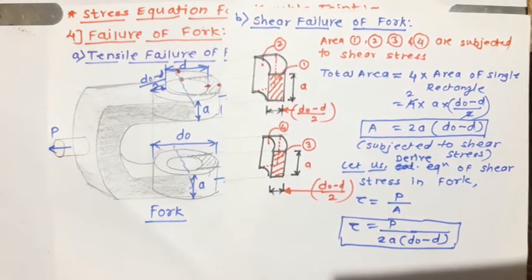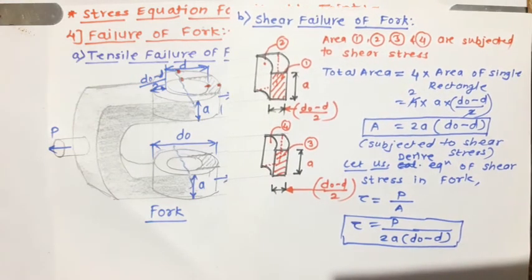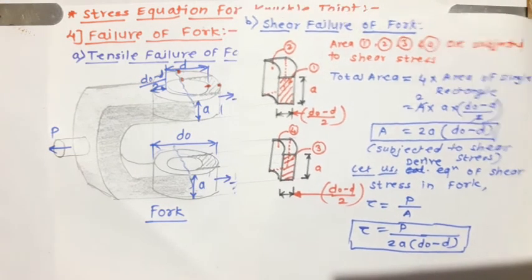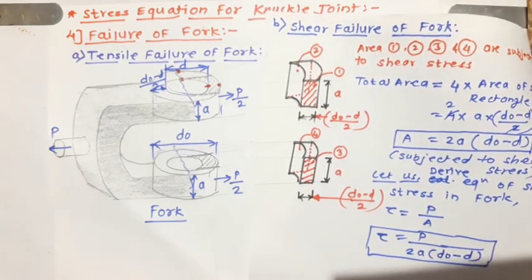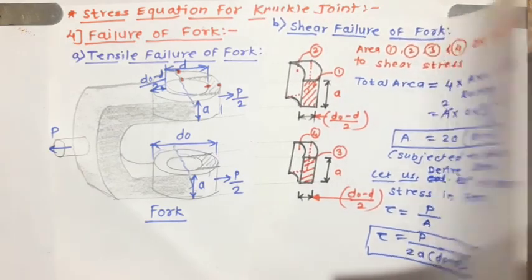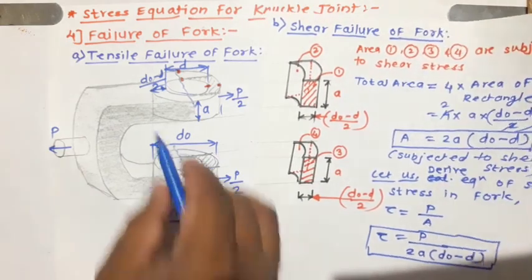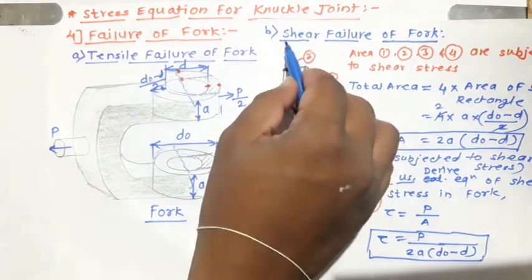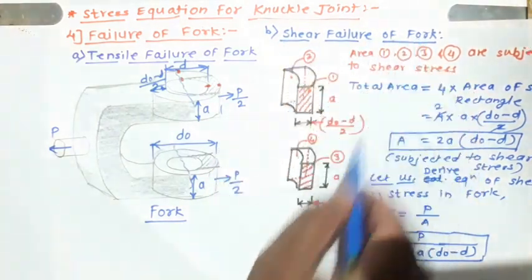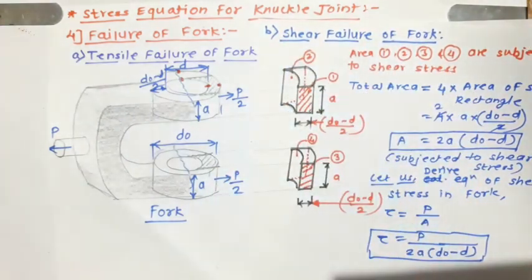With this equation, we have completed the analysis of failures of the fork. The first failure was the tensile failure of the fork, and the second is the shear failure of the fork.